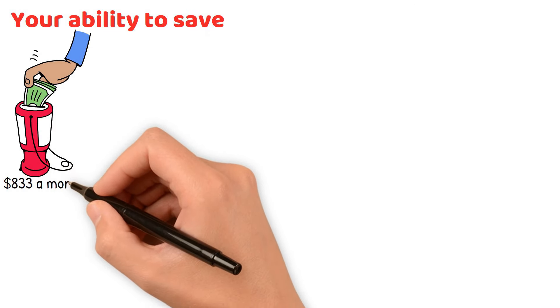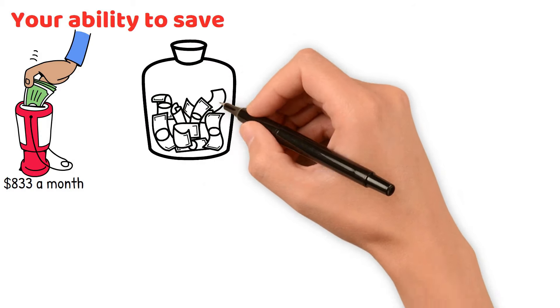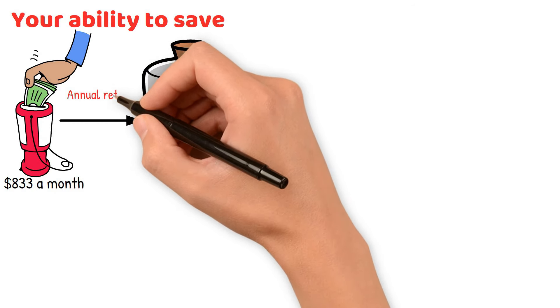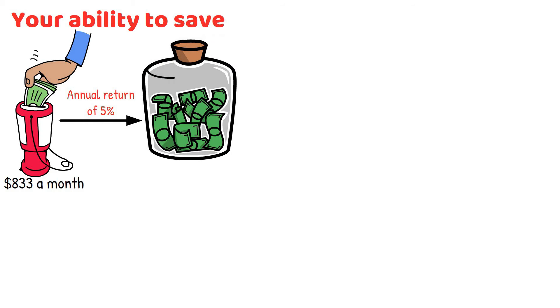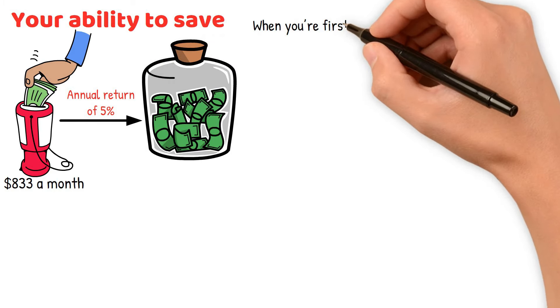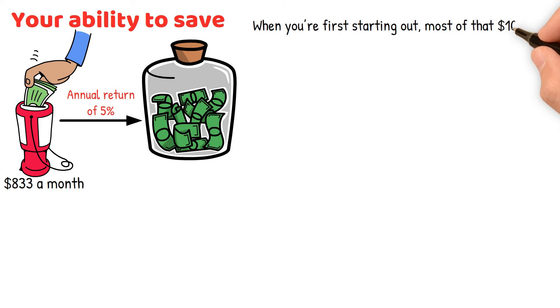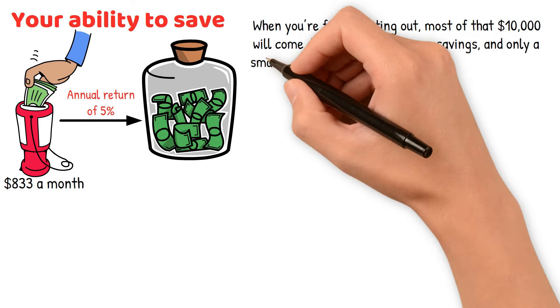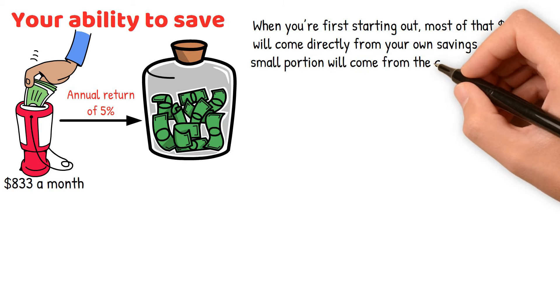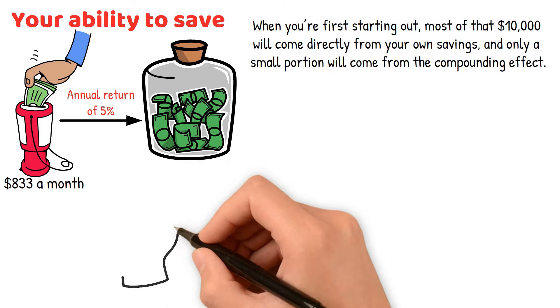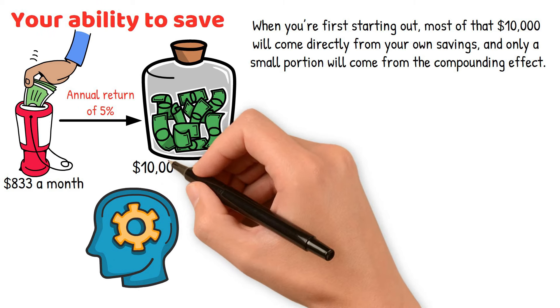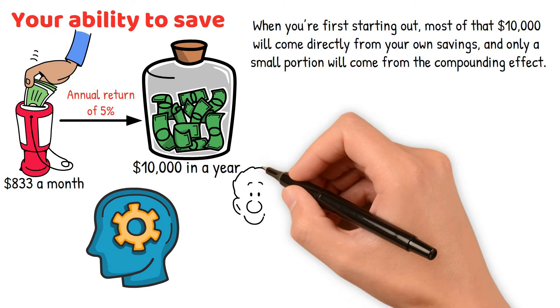Let's say you're able to save $833 a month, which adds up to $10,000 in just one year. With a hypothetical annual return of 5%, you've already reached that $10,000 milestone within a year. But here's the kicker, when you're first starting out, most of that $10,000 will come directly from your own savings, and only a small portion will come from the compounding effect. This shows just how crucial it is to be disciplined and consistent with your savings, especially in the beginning.